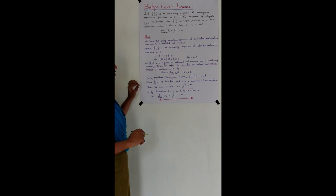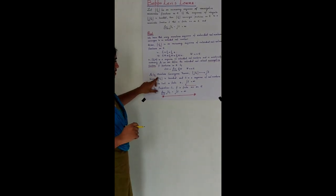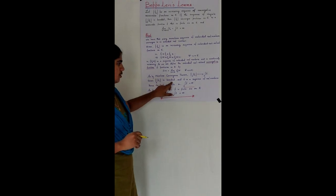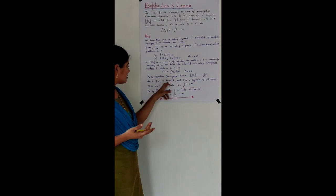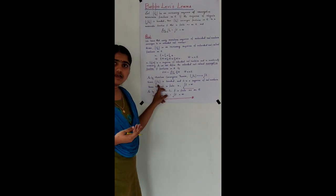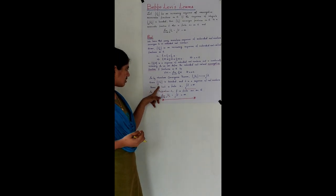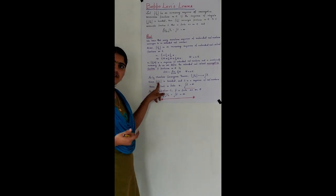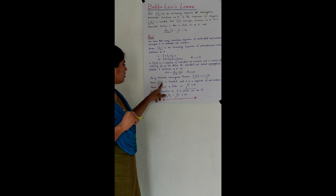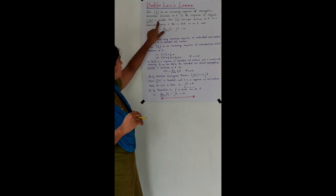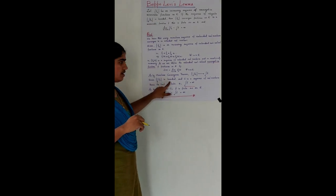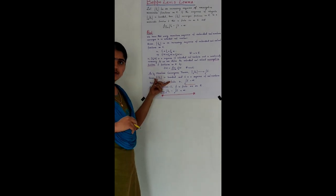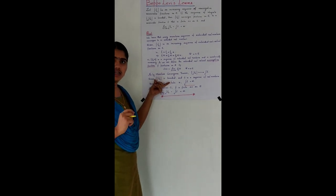We are given that the sequence of integrals over E of Fₙ is bounded. The integrals over E of Fₙ are real numbers, and this sequence is bounded as given in our theorem. It is also monotonically increasing, so it has a limit, which is a bounded sequence of real numbers.